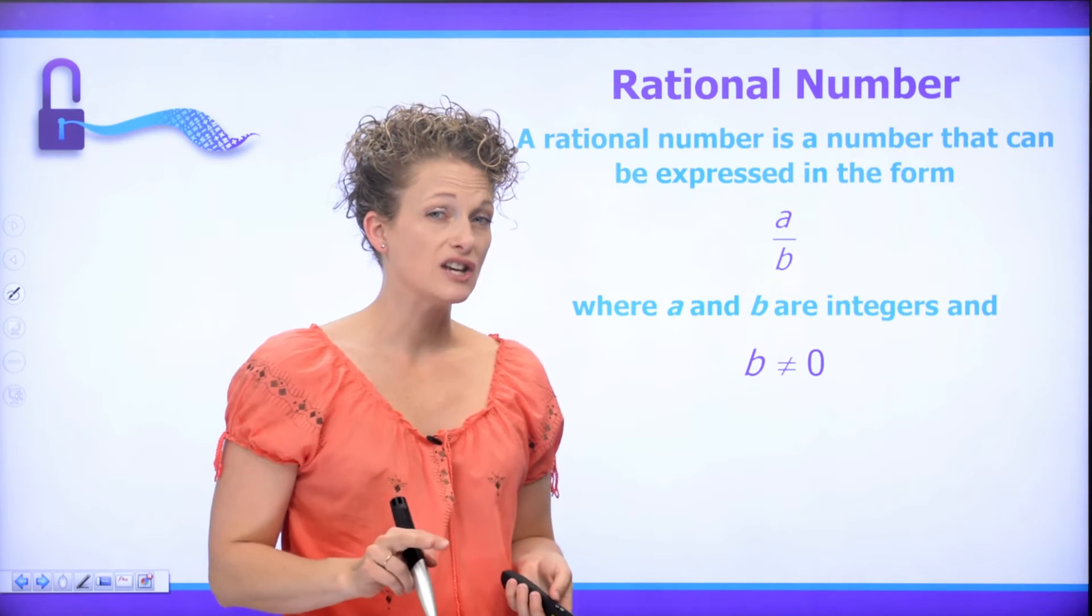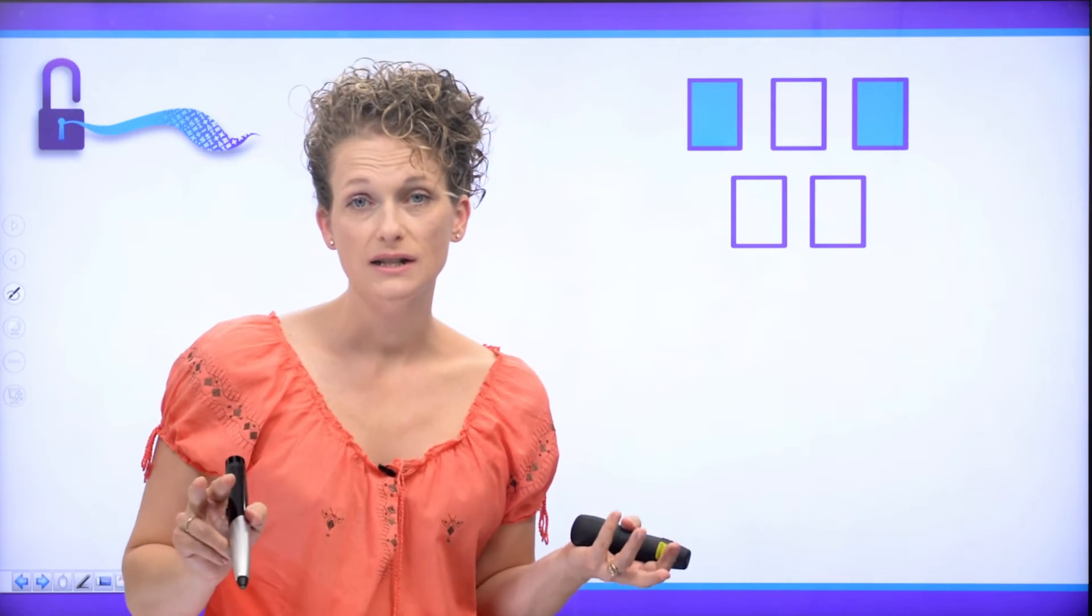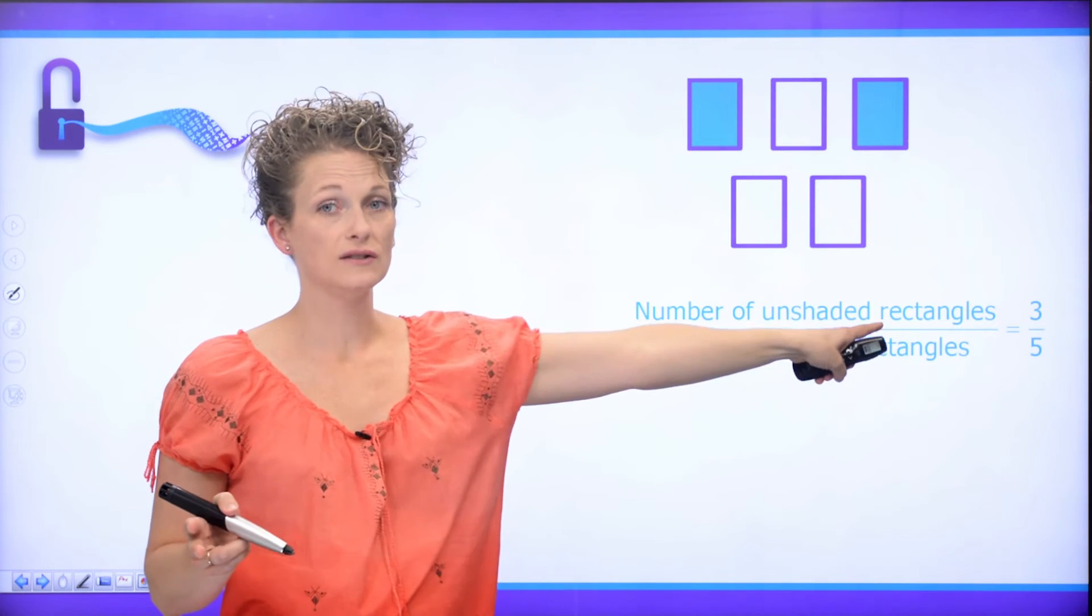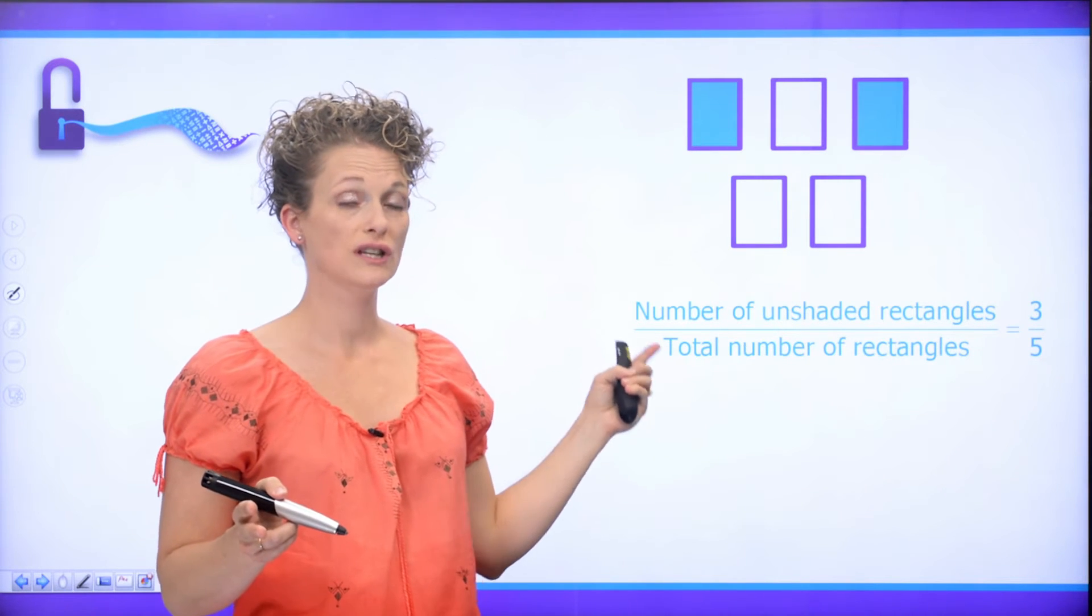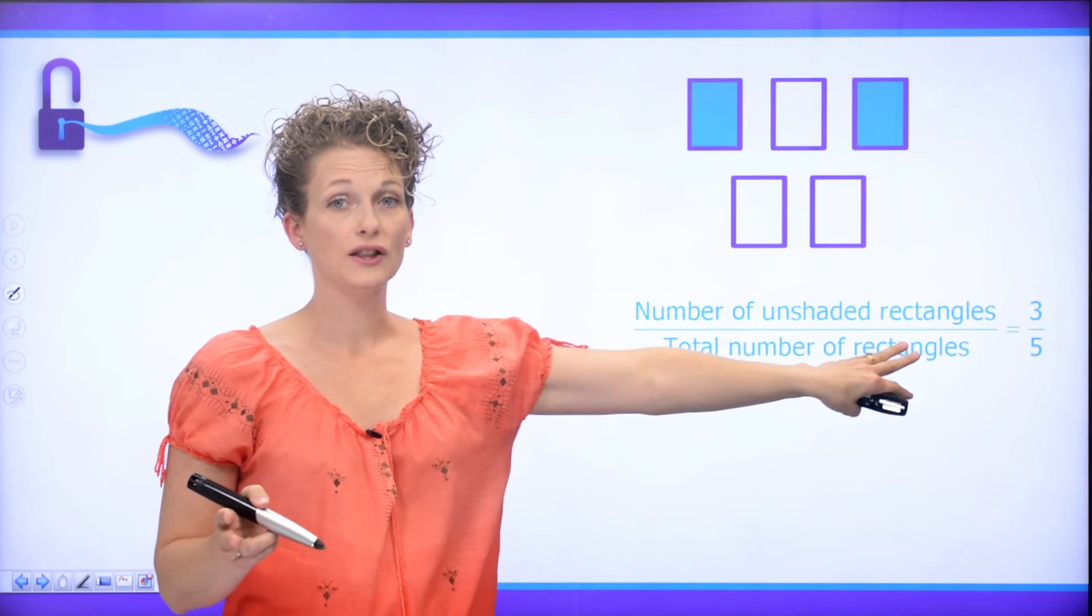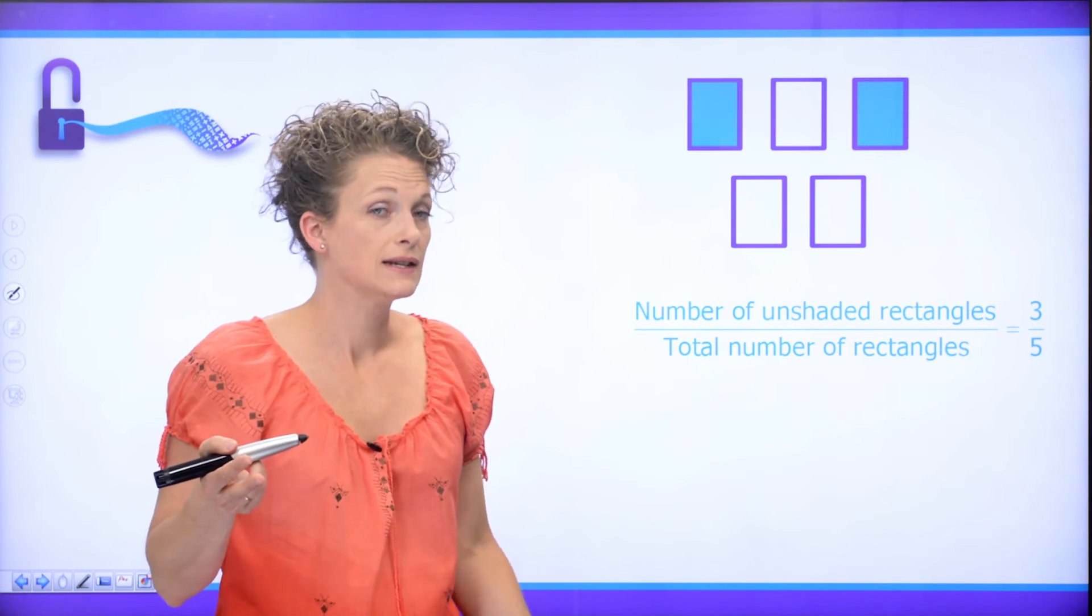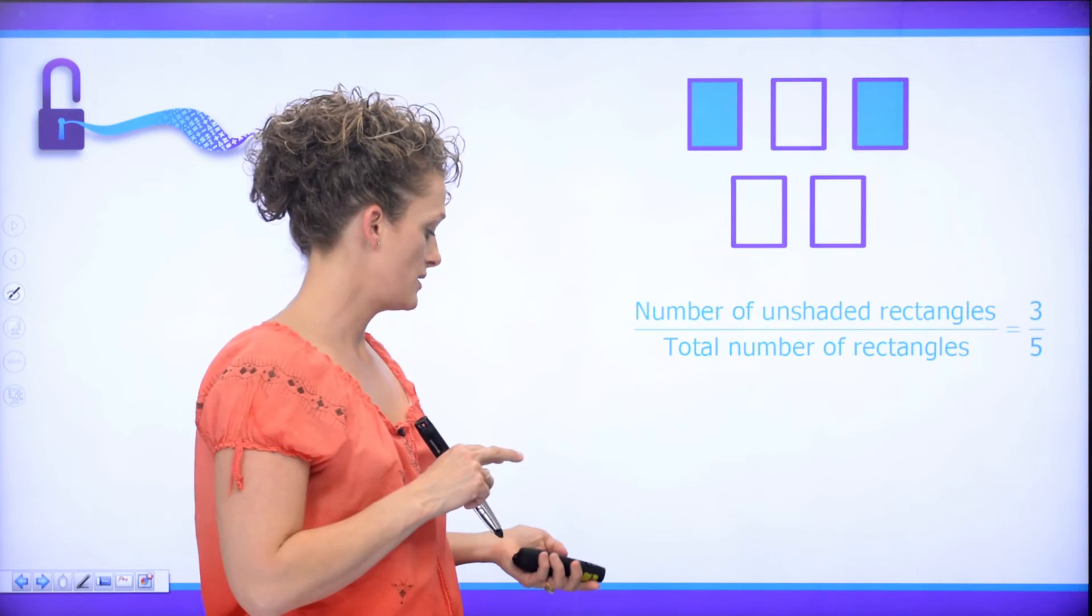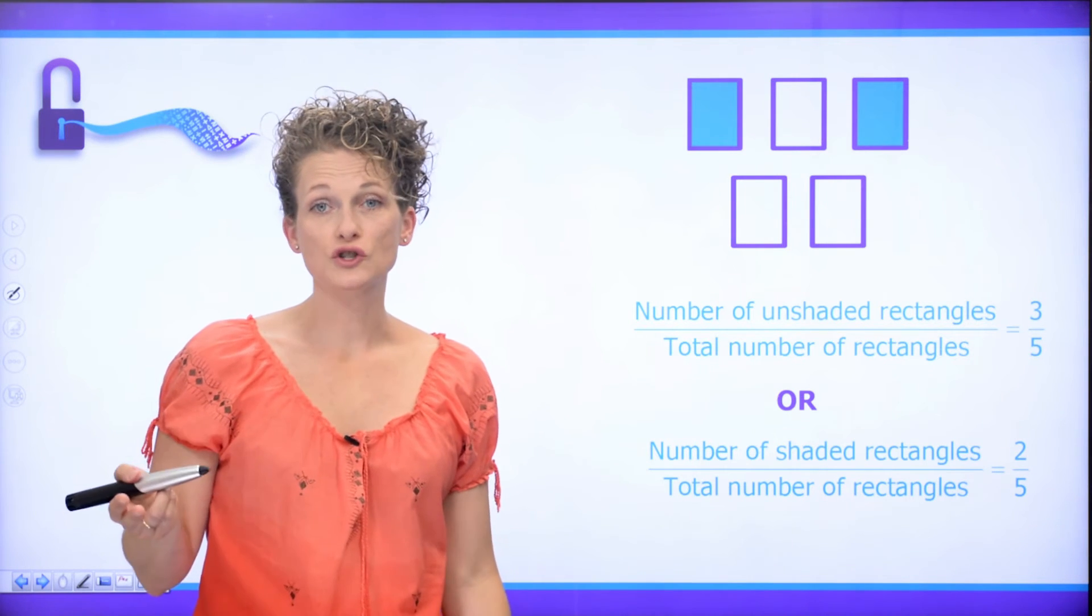So let's look at a graphical representation of what a rational number might look like. I have some rectangles, and some of them are shaded, and some of them are unshaded. So I could create a rational number to represent this picture. I have three unshaded rectangles, and I have a total of five. So if I represent the number of unshaded rectangles to the number of total rectangles, I get three over five. And three over five is a rational number. I could also represent this picture by the shaded rectangles and the total number of rectangles. And that would be two over five, which is also a rational number.